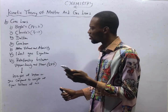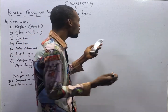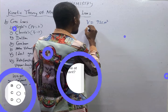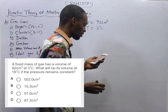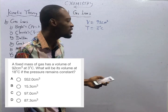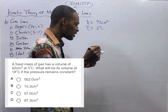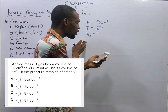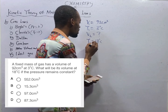Look at this. This question says: a given mass of gas has a volume of 92 cm³ at 3 degrees Celsius. Temperature equals 3 degrees Celsius. What will be the volume at 18 degrees Celsius? We already have volume — let's take it to be the first volume. We have temperature — let's take it to be the first temperature. What will be the second volume? The second temperature is 18 degrees Celsius.